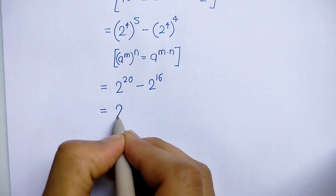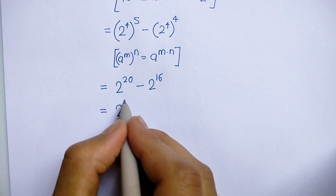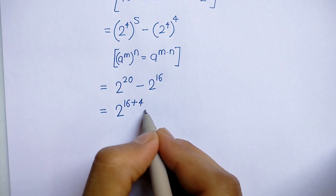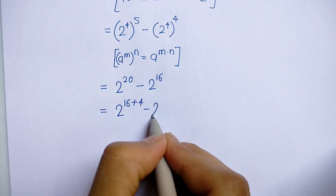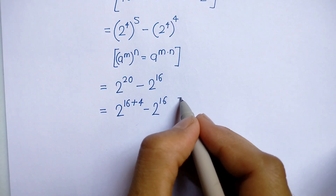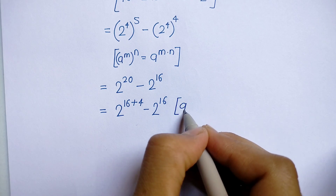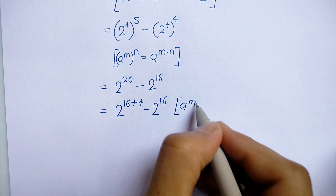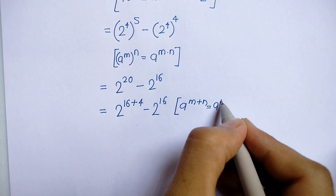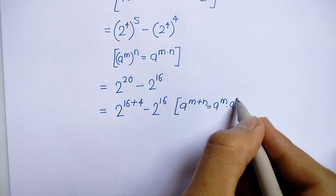Now we can write 20 as 16 plus 4. So we have 2 to the power 16 plus 4, minus 2 to the power 16. We know the exponential rule that a to the power m plus n is equal to a to the power m into a to the power n.